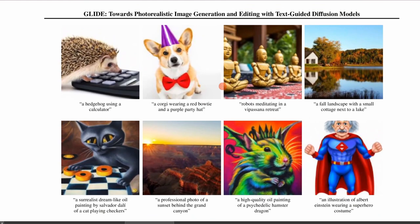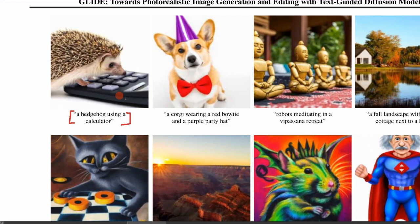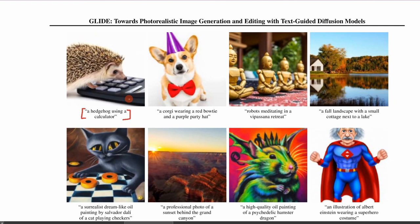This is what GLIDE produces — images conditioned on text prompts. We have a prompt like 'a hedgehog using a calculator' and we can see an image that GLIDE generated which is fairly reasonable. Then we have another example: a Corgi wearing a red bow tie, and you can see attribute binding — the model has to understand that red corresponds to the bow tie and purple corresponds to the party hat. The model has to hallucinate and create those, then place them correctly in the image to make it look realistic.